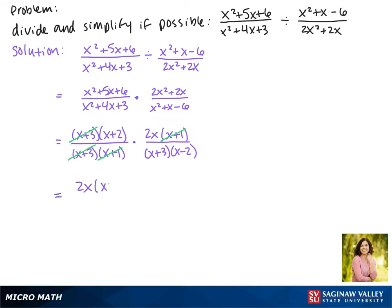So what we have left is 2x times x plus 2 over x plus 3 times x minus 2. So this is one way that you can write your answer. We can also distribute everything, so we can write this as 2x squared plus 4x over x squared plus x minus 6.